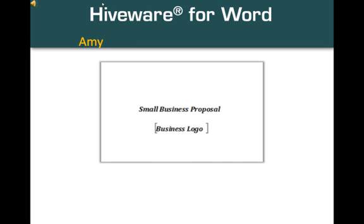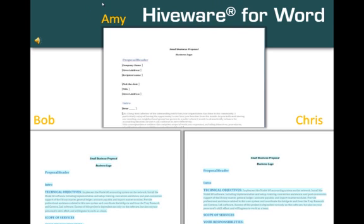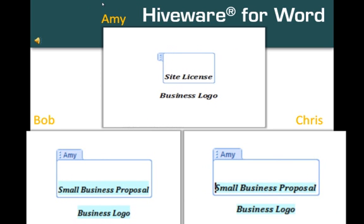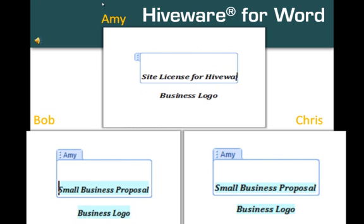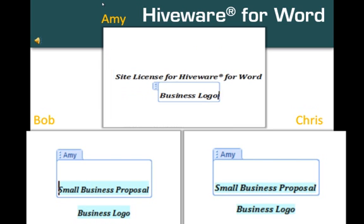Amy started the document by editing a Word template named Small Business Proposal. Amy is creating a proposal to upper management to site license Hybra for Word, so she changes the title to reflect that, making it 'Site License for Hybra for Word.' Hiveware is a registered trademark, so she uses standard Word editing commands to insert the trademark symbol. When finished, her changes show up immediately at Bob and Chris's screens.